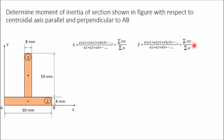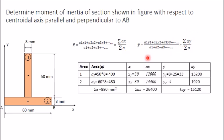We prepare a table with columns for area, x, y, Ax, and Ay. We have two areas: one and two. For area one, the length is 50 and width is 8, so area one = 50 × 8 = 400 mm².